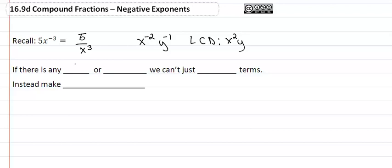If there's any pluses or minuses in there, we can't just move the terms, meaning that we can't do this right here. Instead, we multiply by the LCD to get rid of the negative exponents.